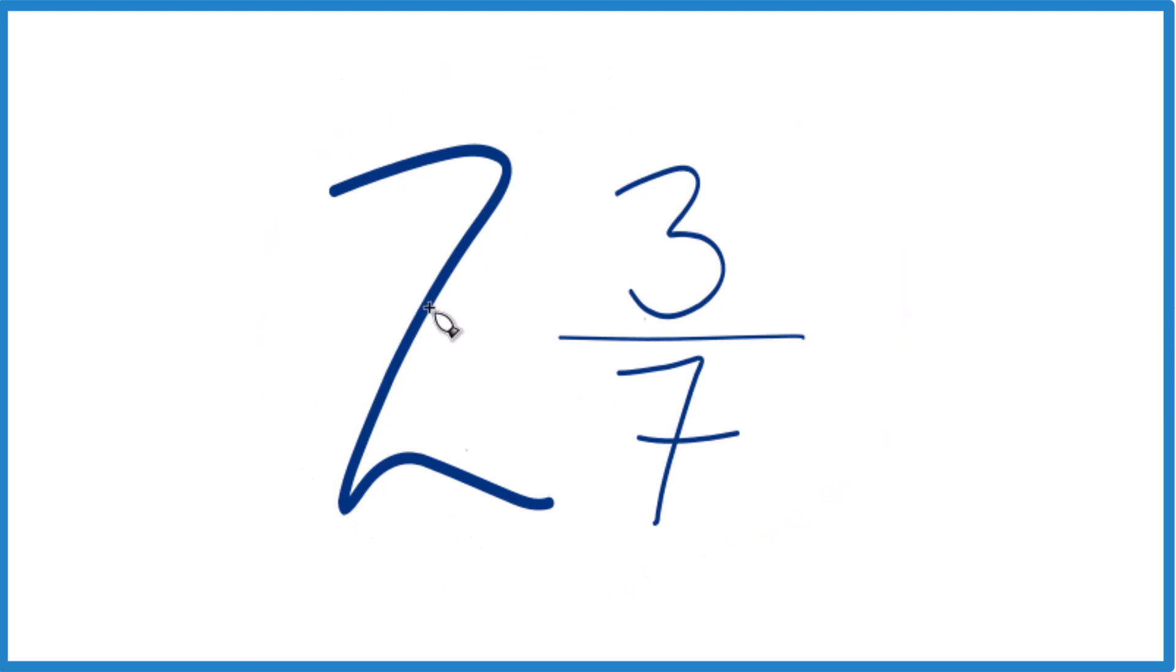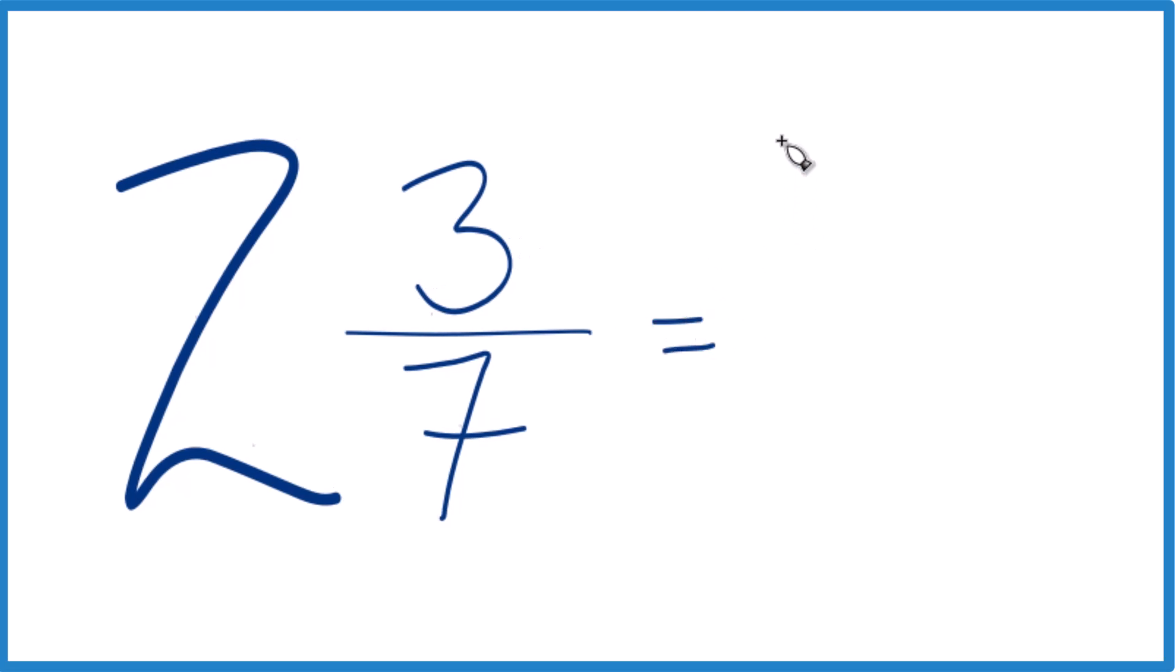You take the whole number, 2 times 7. 2 times 7 is 14, then you add 3. So 14 plus 3, that is 17.